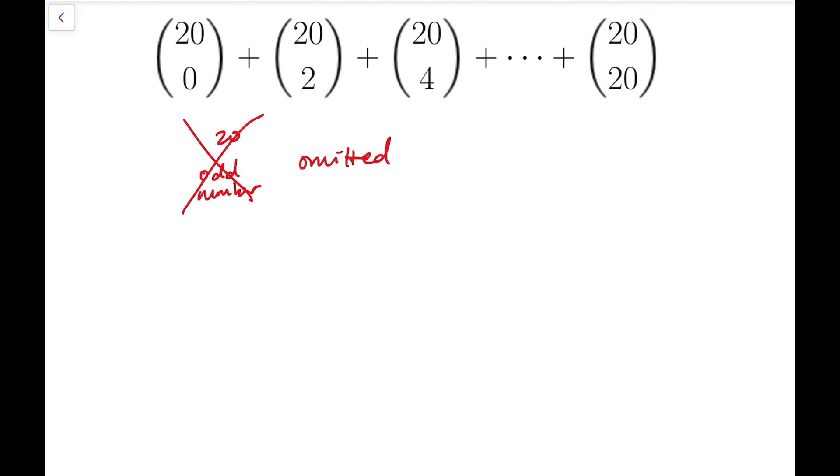And to evaluate this, we need to consider multiple binomial expansions. Notice that if we add all the terms of the form 20 choose r where we have no restriction on r, just between 0 and 20, then we will have the sum to be equal to 2 to the power 20.